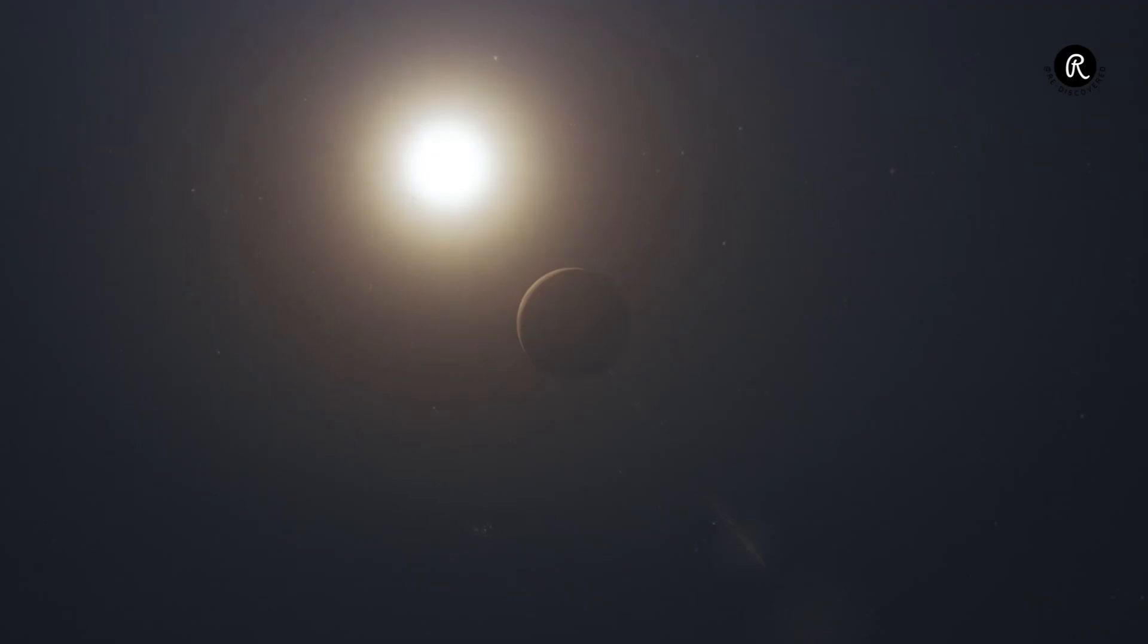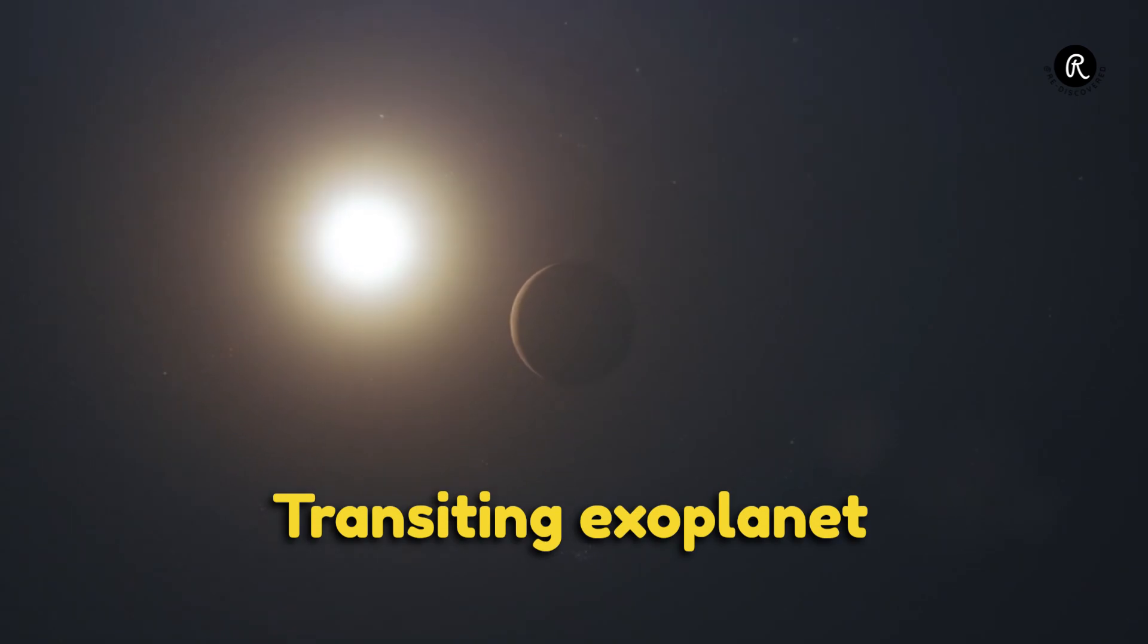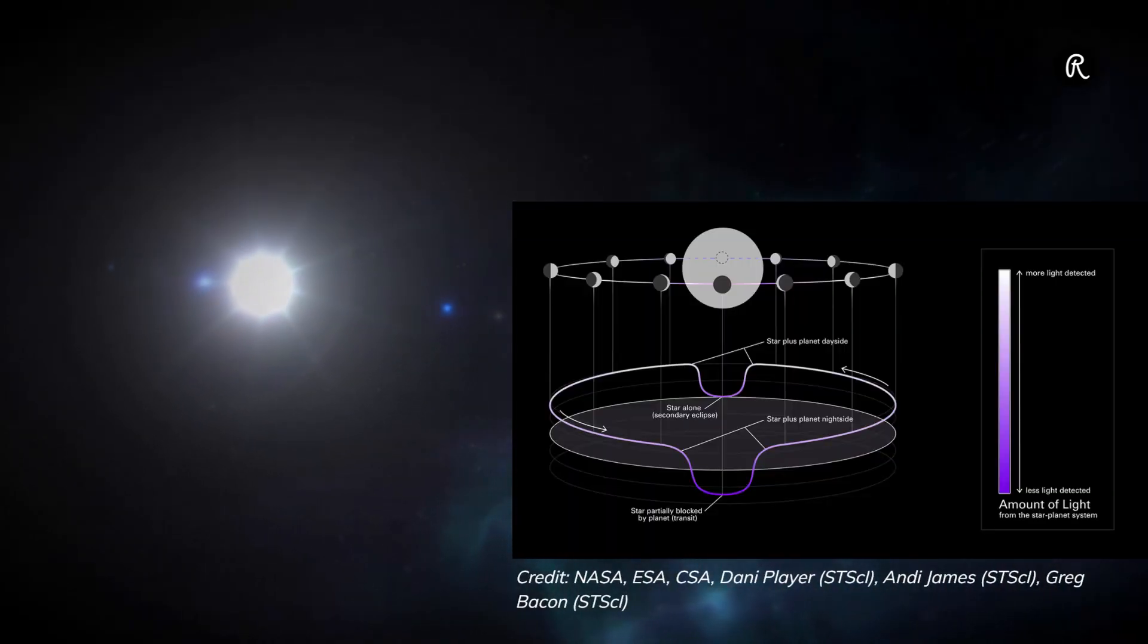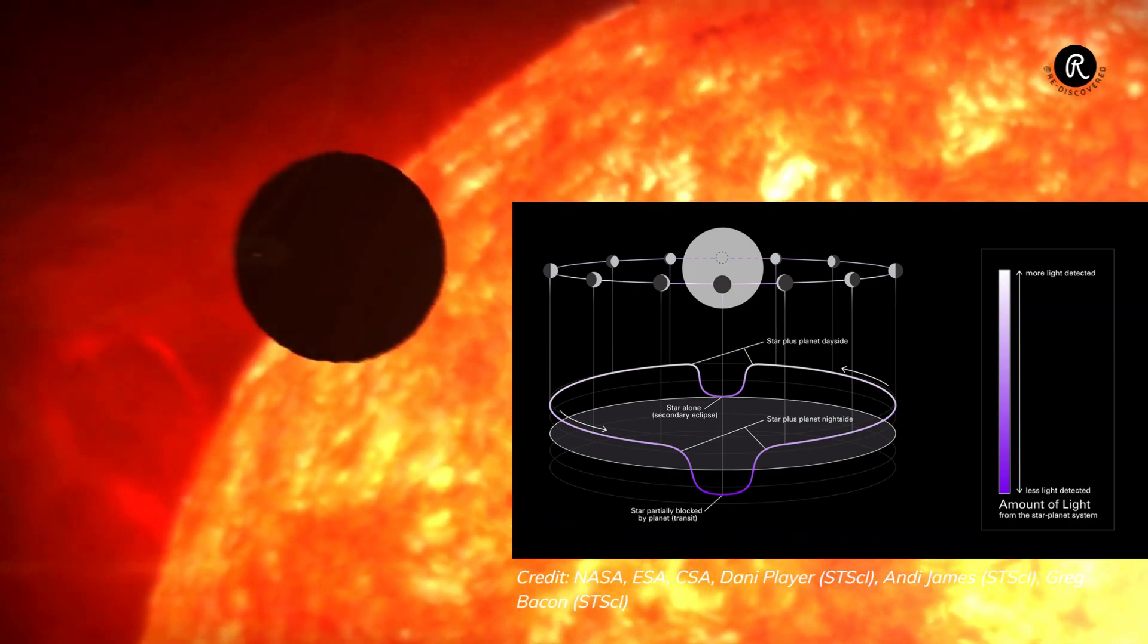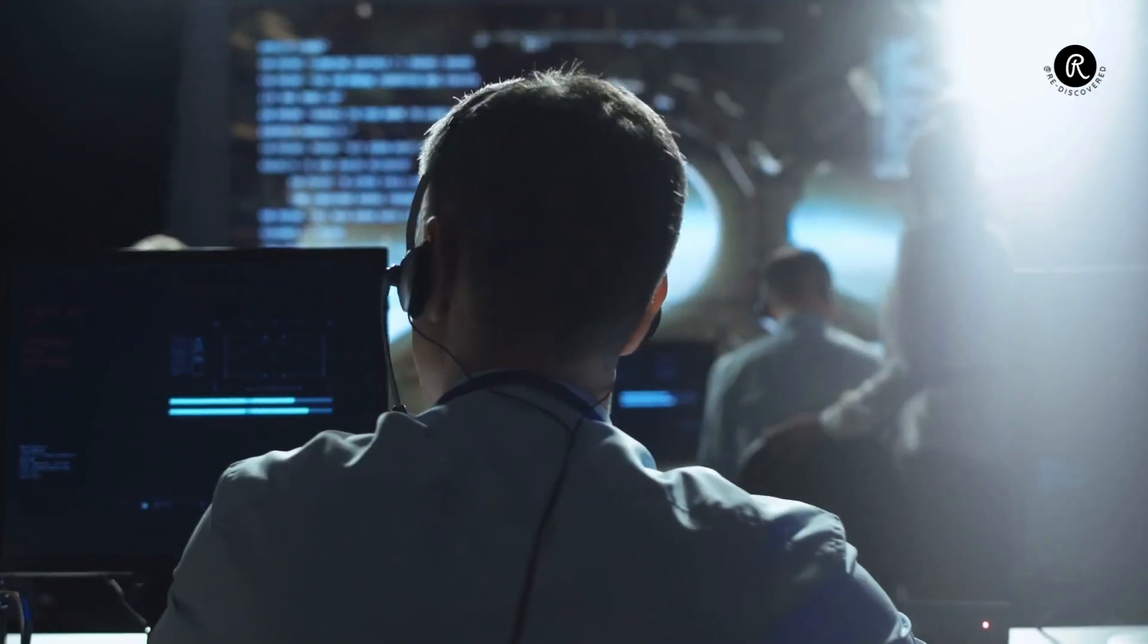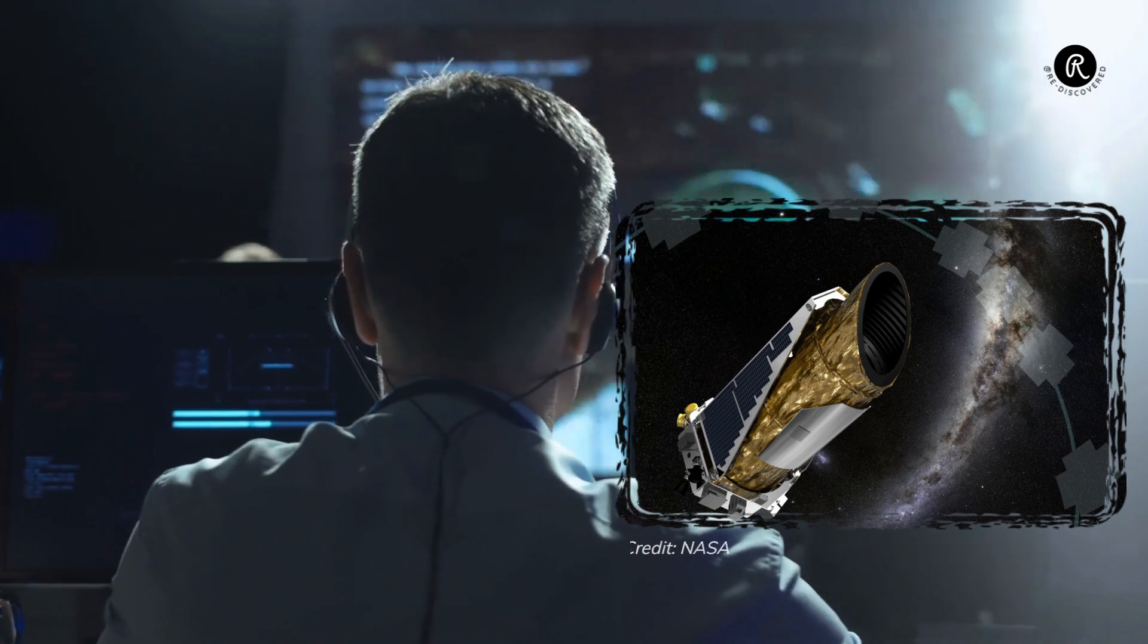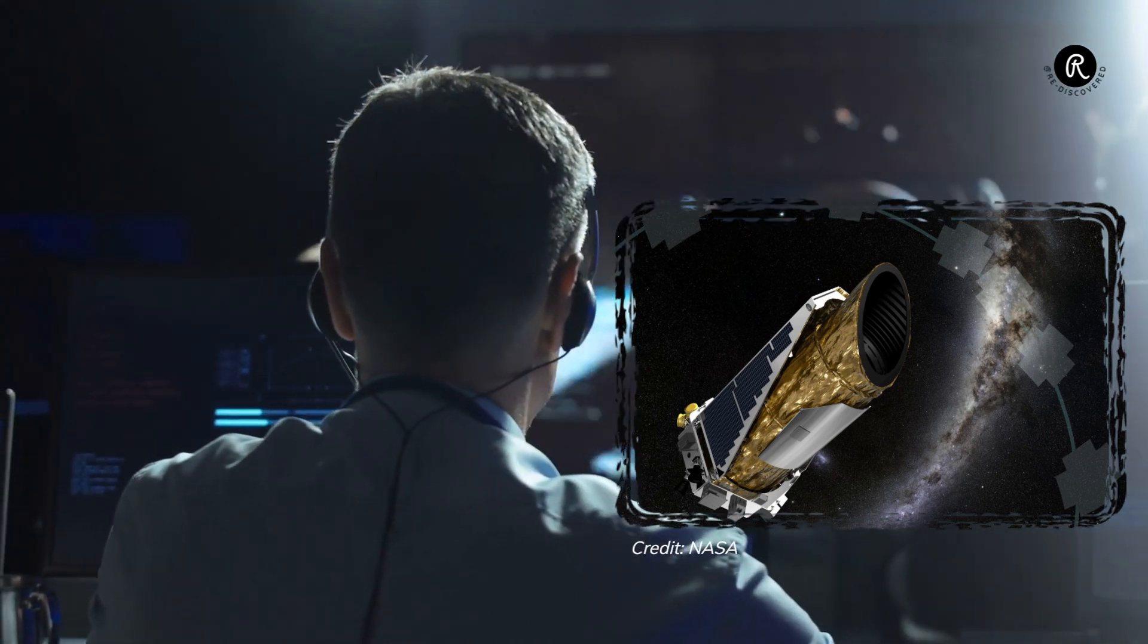K218 b is a transiting exoplanet, which means a tiny drop in brightness can be detected in its host star when it passes across its face. This is what helped NASA's K2 mission to discover the exoplanet in 2015.